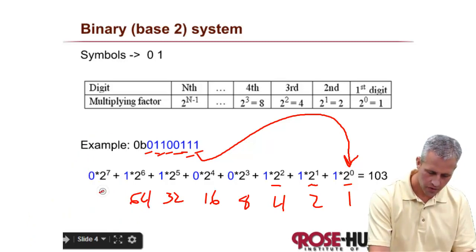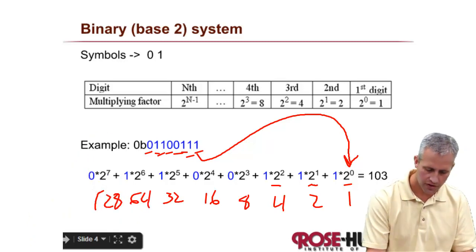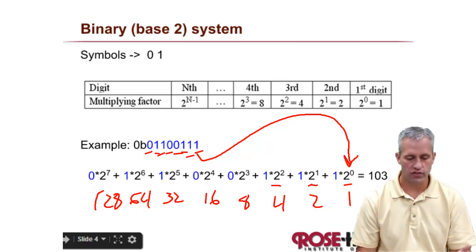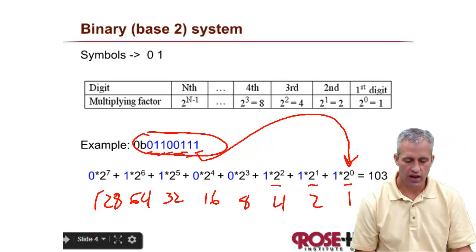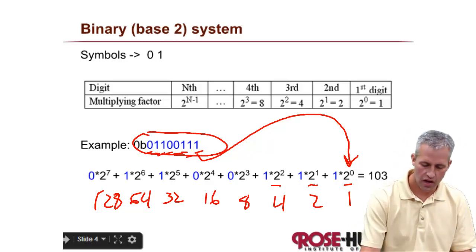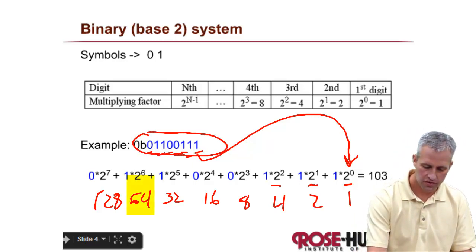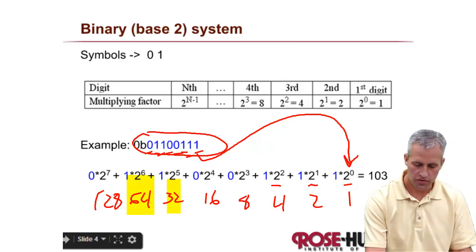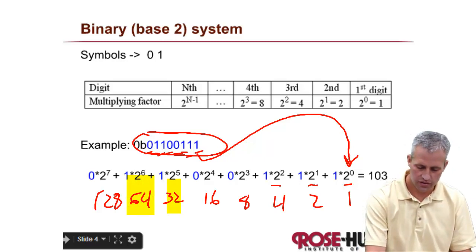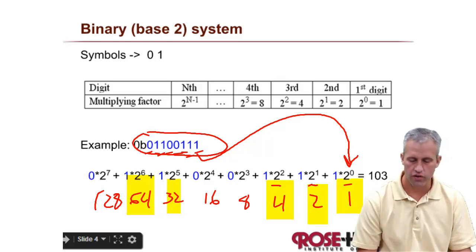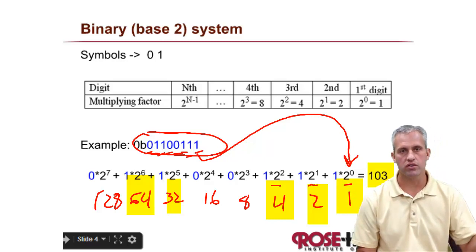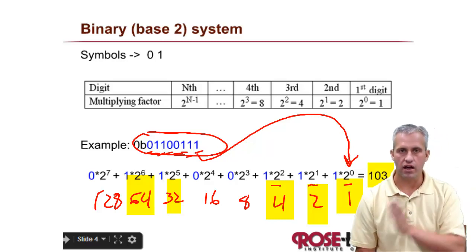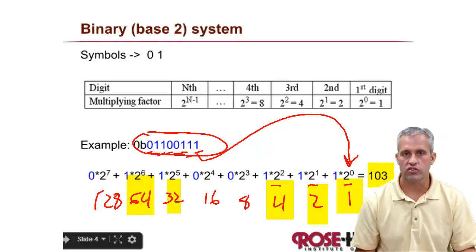Then 128. To figure out what a binary number equals, you add up the place values wherever there's a one. For example: 64 plus 32 is 96, plus a few more gives you 103. That's how you convert from binary to decimal. Most of this lecture is about giving you a chance to practice — the concept is easy but it takes a little while to get good at shifting between base systems.